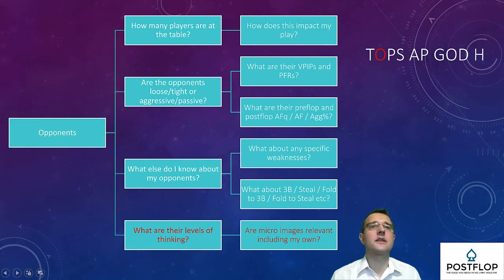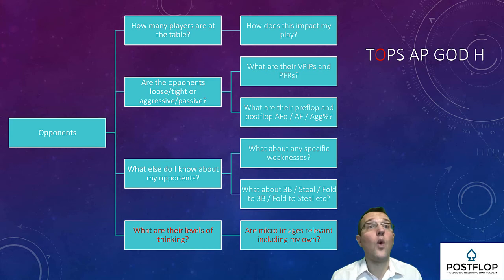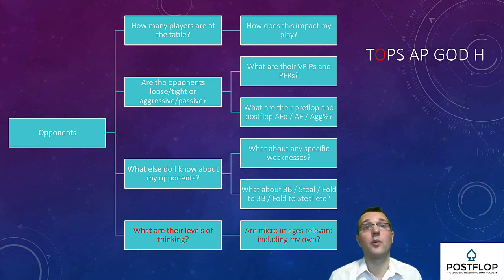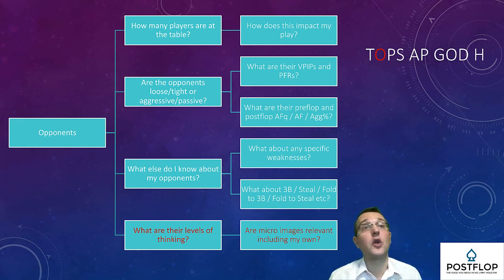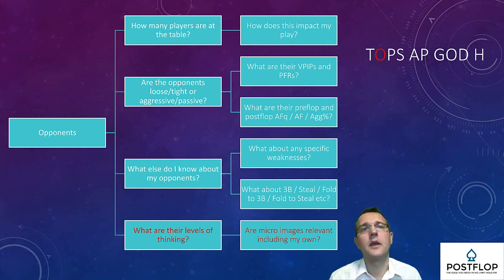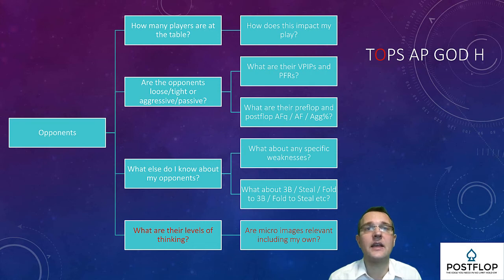The final question I recommend asking about opponents before the cards are dealt is: what are their levels of thinking? This gets us nicely prepared for the action. Frequently I analyze hands with students and they come up with elaborate and skillful solutions, yet those solutions are completely inappropriate against opponents who are barely even thinking. To nip this problem in the bud we need to try and assess their levels of thinking in advance.